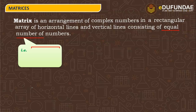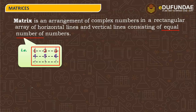If we look here, there are three horizontal lines and three vertical lines, so this is the matrix arrangement: 1, 2, 3 in the 1st row; 4, 5, 6 in the 2nd row; 7, 8, 9 in the 3rd row. The arrangement of numbers in a matrix is enclosed by brackets.